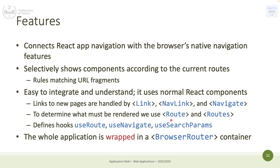To determine what must be rendered, we use another component called Route, which defines: for this path, render these components. The whole application — or at least the part sensitive to routing — must be wrapped in a BrowserRouter container. So we are going to add components: BrowserRouter, Routes, Route, and we are going to use Link and useNavigate to build the routes and allow navigation from one part of the application to another.